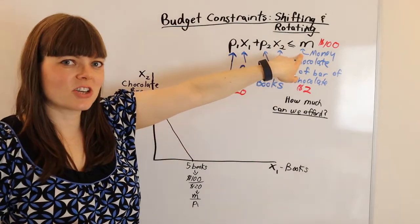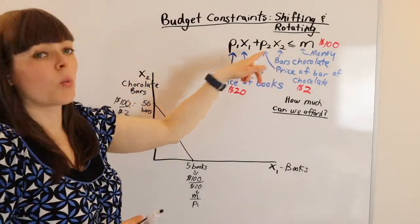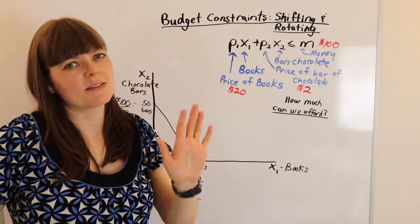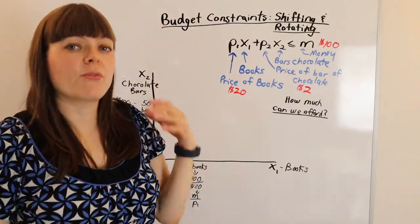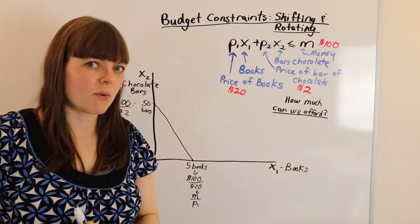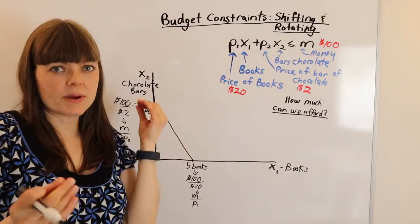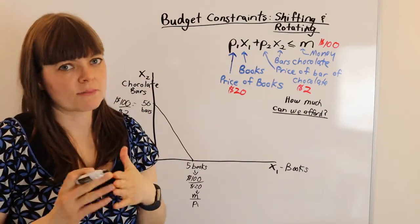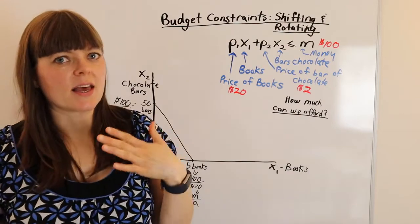One is the amount of money you have can change. And the other is one of the prices can change. And of course, that's a very basic question. But if we can answer that question and think about that one properly, it will help us to think about questions that are more complex when we may have a kink in the budget constraint.